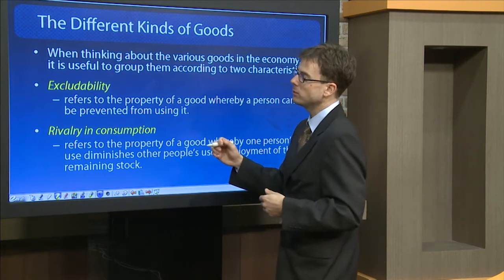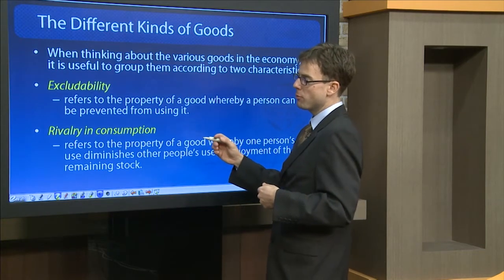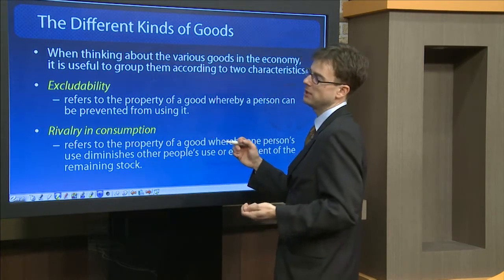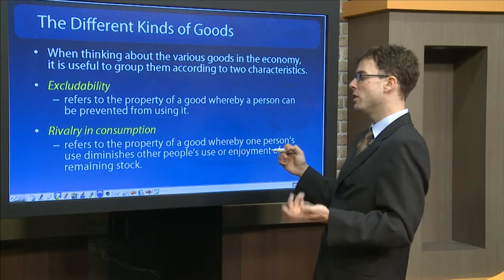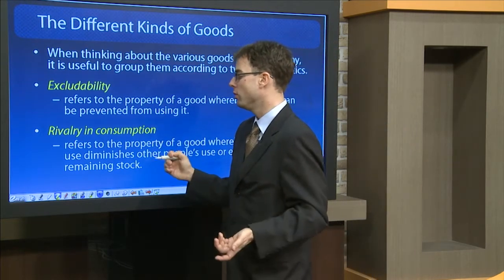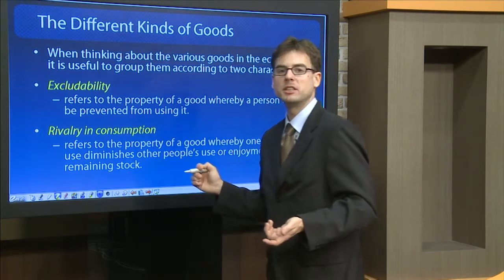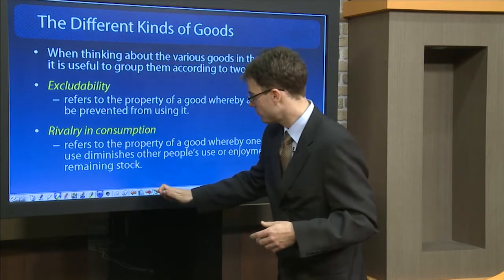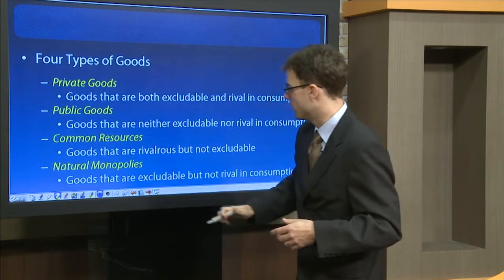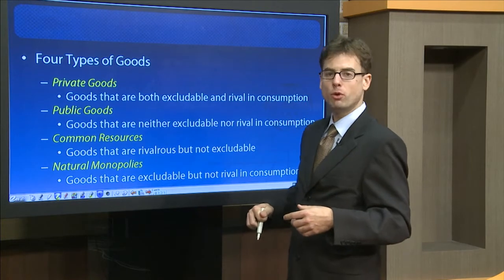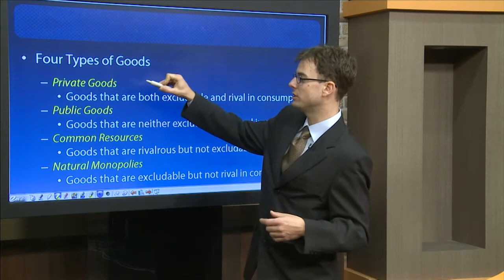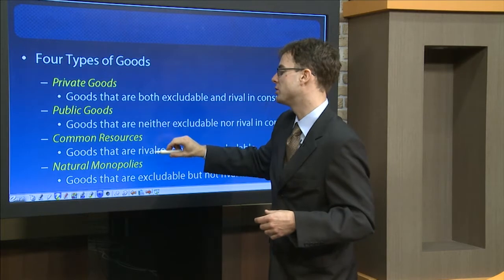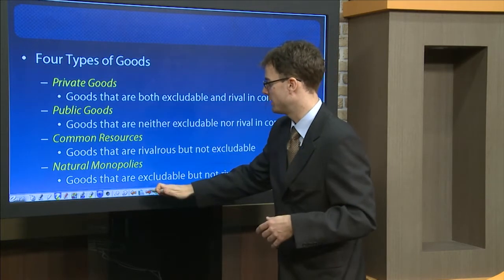Another important property of commodities in the marketplace is whether the commodities are rival in consumption or rivalrous in consumption or not. Generally we will distinguish four kinds of commodities: private goods, public goods, common resources, and natural monopolies.